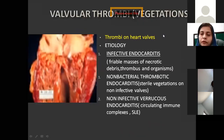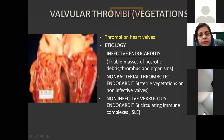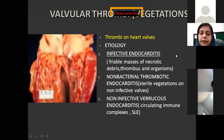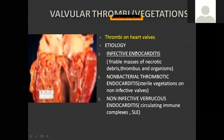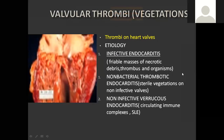There is another type of thrombus called valvular thrombus, also known as vegetation. They develop from the cardiac valves and are basically thromboid masses on the cardiac valve. The most common cause is infective endocarditis, which is inflammation of the cardiac lining, most commonly secondary to bacterial infection. These vegetations are small masses of necrotic debris, thrombus, and the microorganism or bacteria causing infective endocarditis.